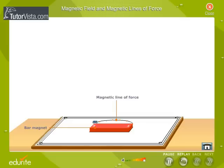Similarly, place the compass at different points near the north pole of the magnet and map the lines of force.